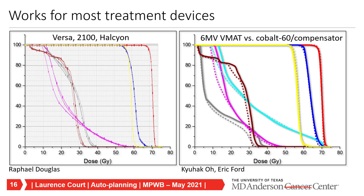We also looked at whether knowledge-based planning works well across different treatment devices. Applying the same technique and optimization criteria to an Elekta machine and two Varian machines showed very similar DVHs. We went further and compared a regular Varian machine to a Cobalt-60 treatment device using a compensator for IMRT—the DVHs are all very similar. The same technique can be applied to multiple different machines, which is terrific when you want to take an AI approach and scale it to help people globally.